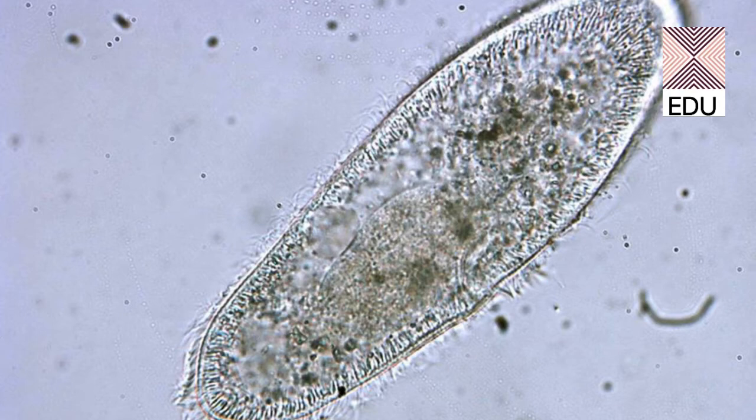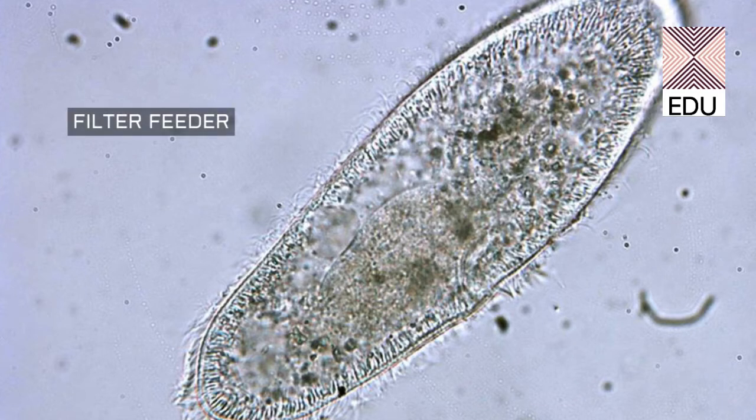It also feeds on small protozoans, unicellular plants like diatoms, yeasts, algae, and small bits of animals and vegetables. It can eat anything, but what is most important is the size of the food particles. It can take different sizes but can filter out the smaller ones. That's why paramecium is also called a filter feeder.